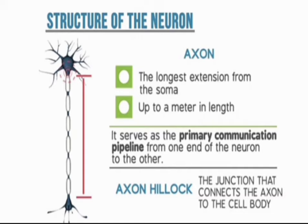The axon is the name given to the longest process of the neuron and is also known as the nerve fiber. It is the longest extension of the neuron, with length up to one meter. It serves as the primary communication pipeline, carrying signals from the cell body to the axon terminals. The axon hillock is the junction point connecting the cell body with the axon.